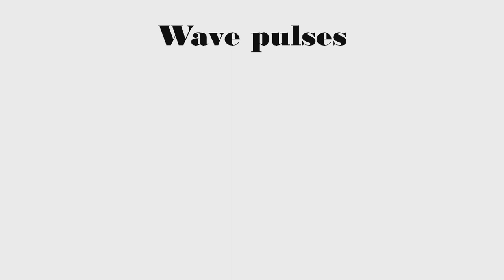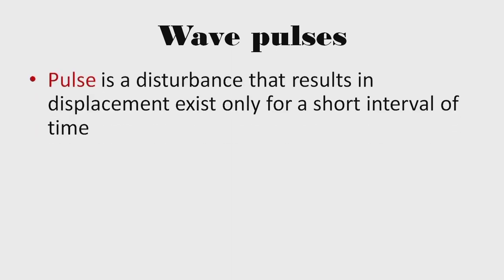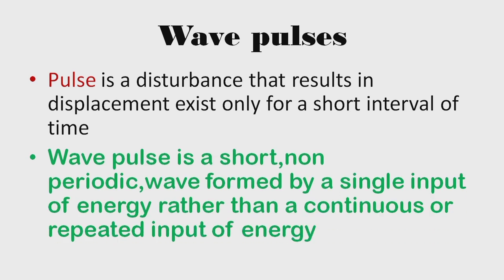What is the meaning of pulse? A pulse is a disturbance that results in a displacement that exists only for a short interval of time. The main differentiating feature is that pulse signals persist only for a short duration of time.